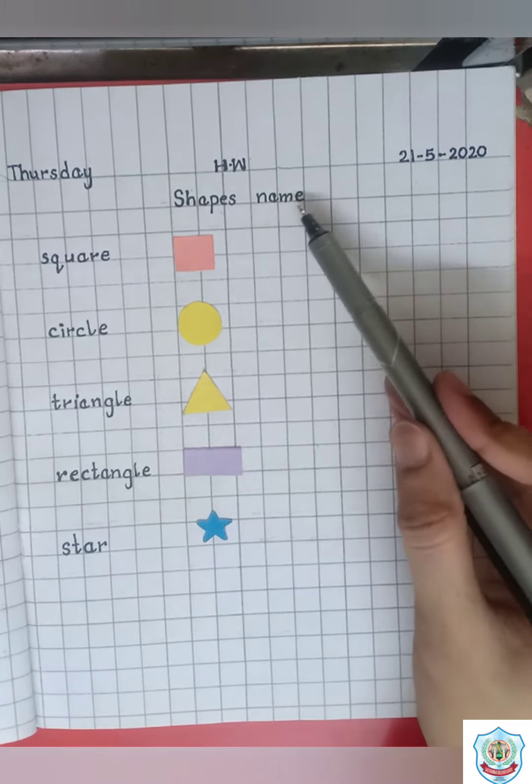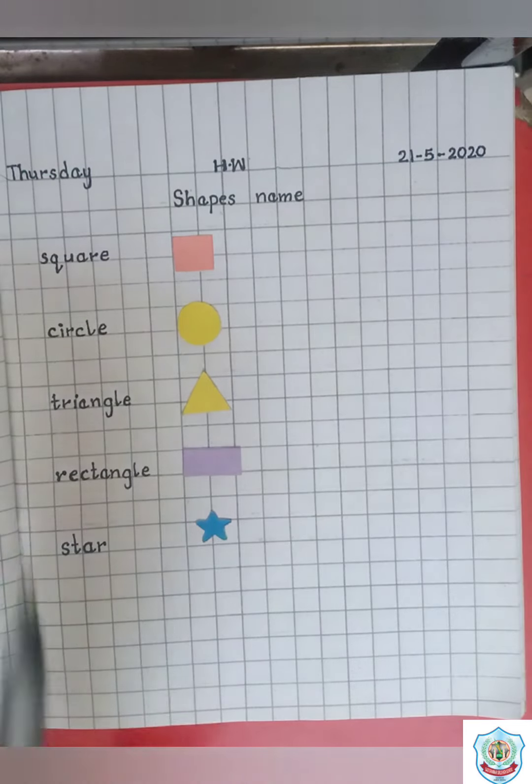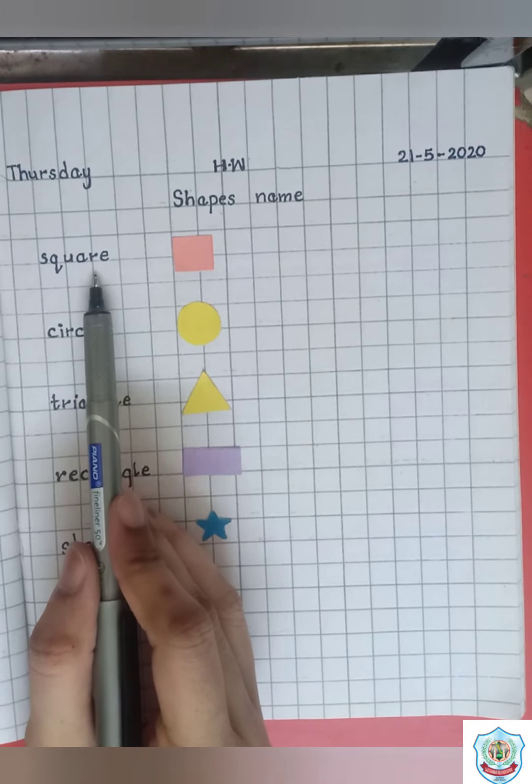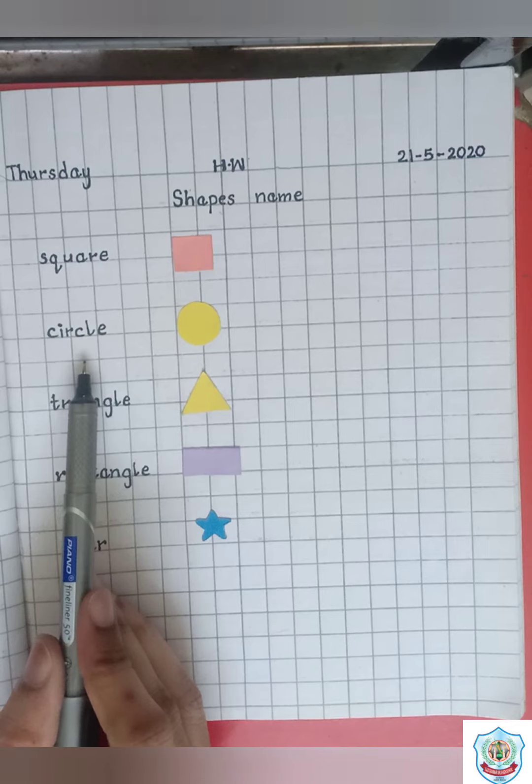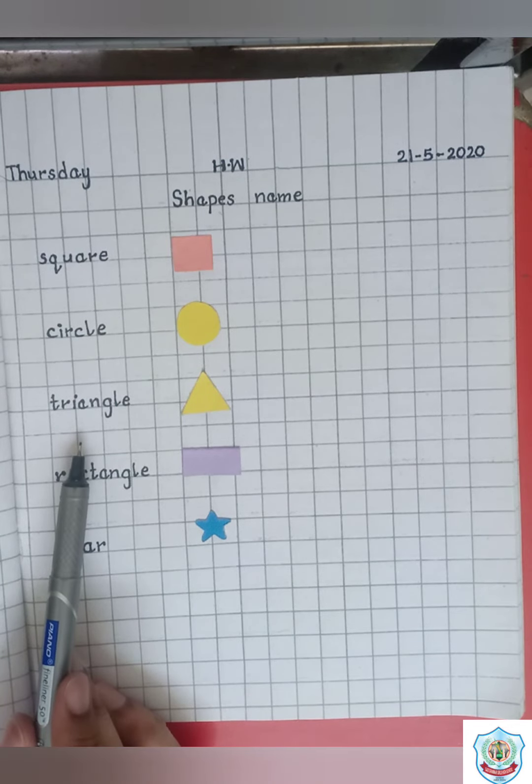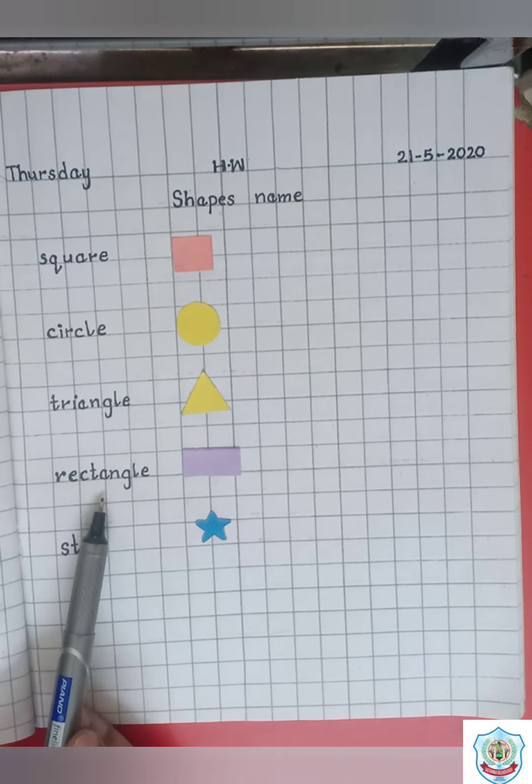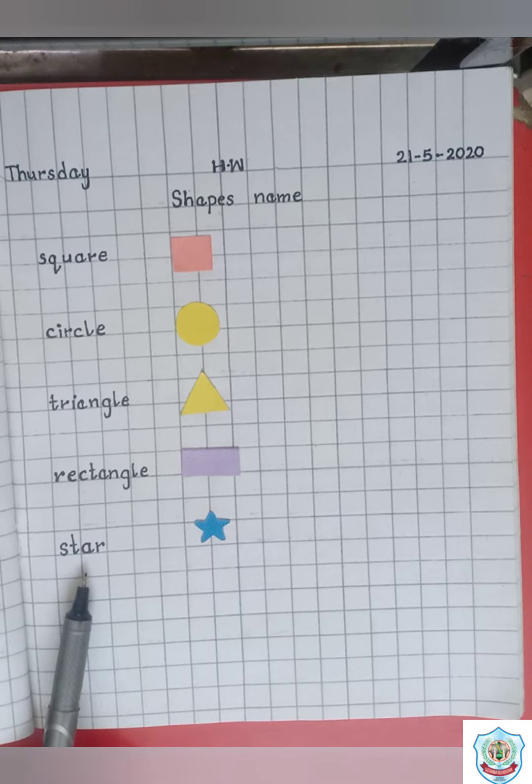Read with me shape's name. The first one is square, circle, triangle, rectangle and star. Thank you.